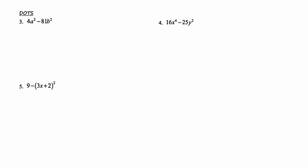Okay, this next slide we're going to review the factoring technique DOTS, which is an acronym that stands for difference of two squares. If an expression can be factored using the DOTS technique, it subscribes to a certain template. I'd like you to write this down as well. If an expression looks like a squared minus b squared, it can be factored as two binomials: a plus b, a minus b.